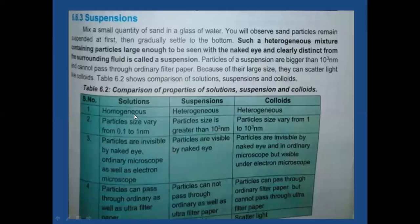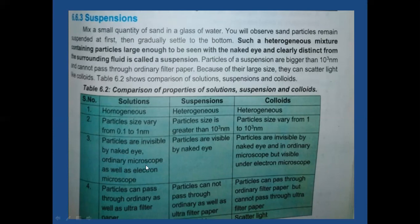Suspensions are also heterogeneous mixtures. Their particles are the largest — even larger than colloids — and they disperse light. They cannot pass through even ordinary filter paper due to their large size. Suspension particles can be seen with the naked eye. In the comparison table: solution is homogeneous; suspension and colloid are heterogeneous. Particle sizes are 0.1–1 nm for solutions, 1–10³ nm for colloids, and greater than 10³ nm for suspensions.